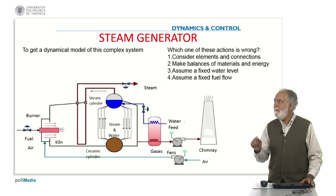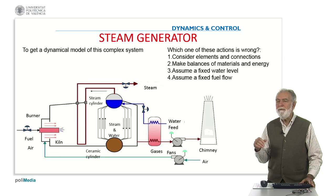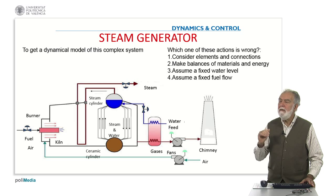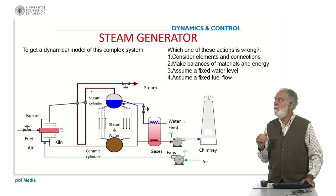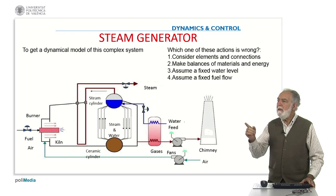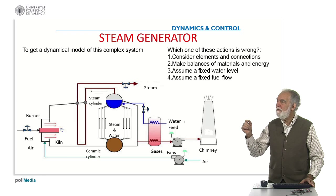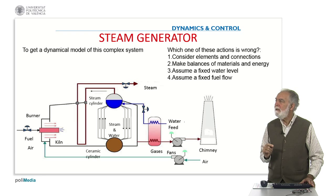To consider elements and connections between the elements. To make balances of materials and energy. To assume that the water level is fixed in the steam cylinder. Or to assume a fixed fuel flow in the entrance of the burner. So, which one of these four actions is wrong?